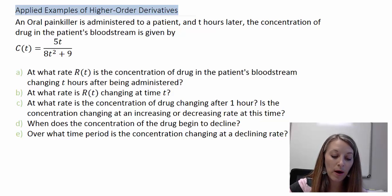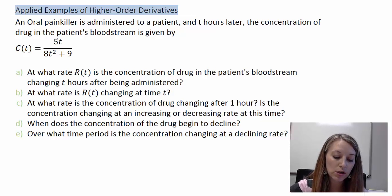In Part A, we want to know at what rate is the concentration of the drug in the patient's bloodstream changing T hours after it's being administered. In Part B, we want to know at what rate is R of T changing at time T. C is what rate is the concentration after one hour? Is it increasing or decreasing?